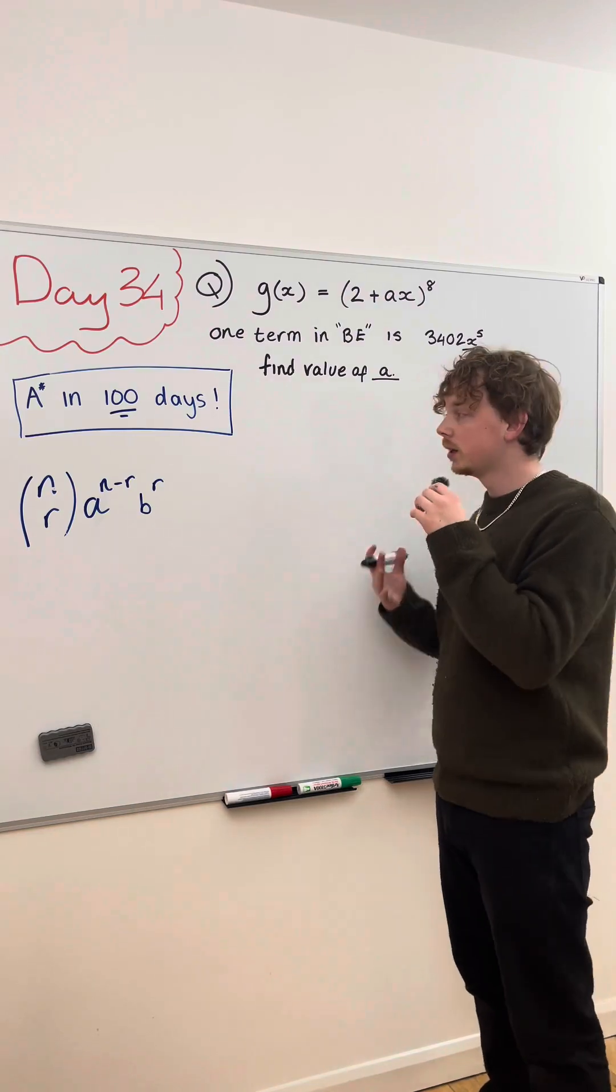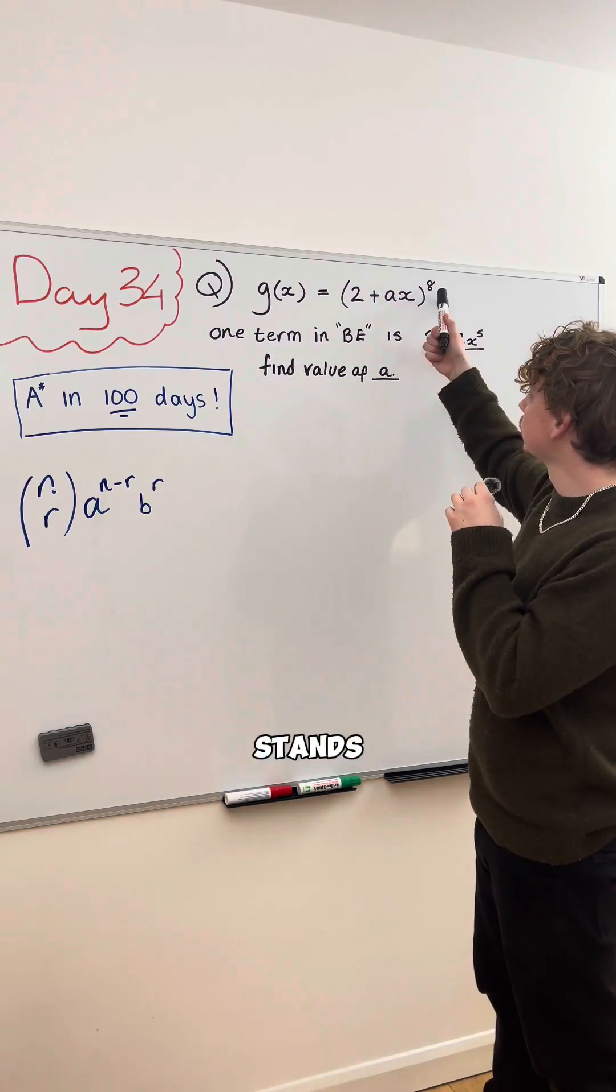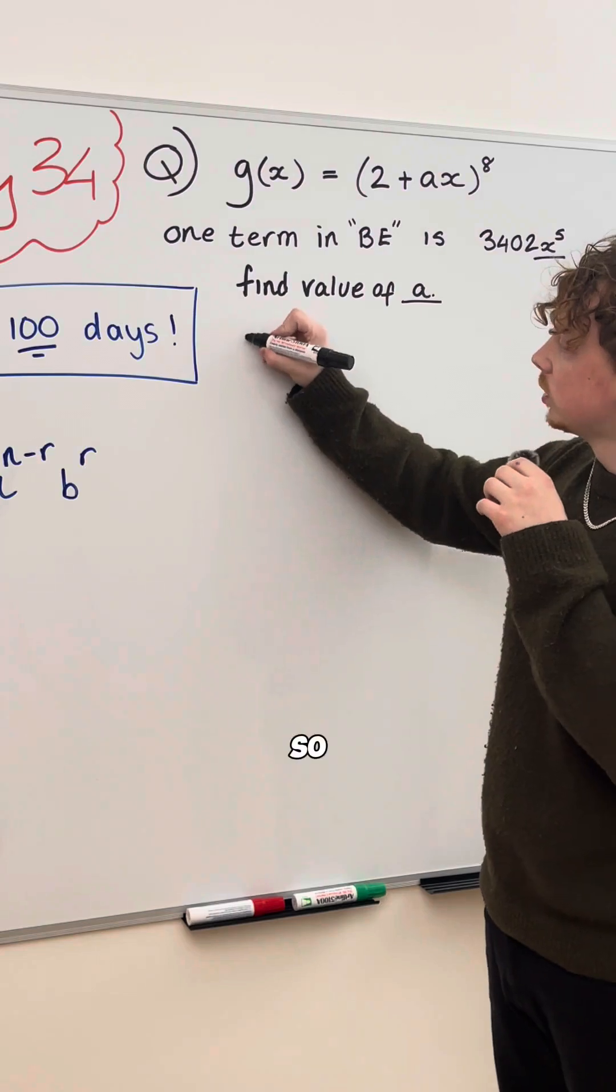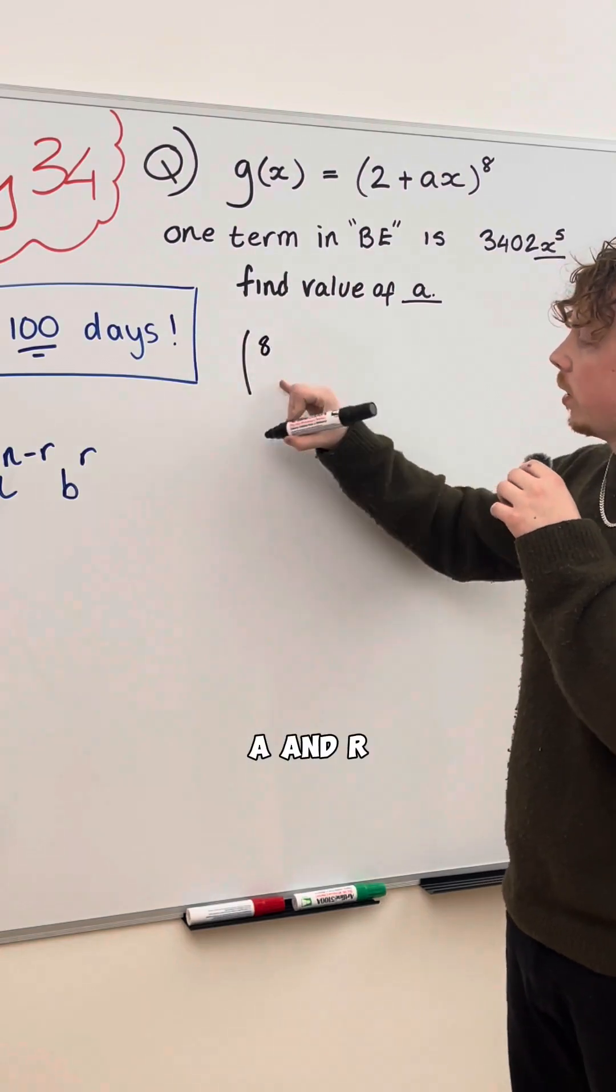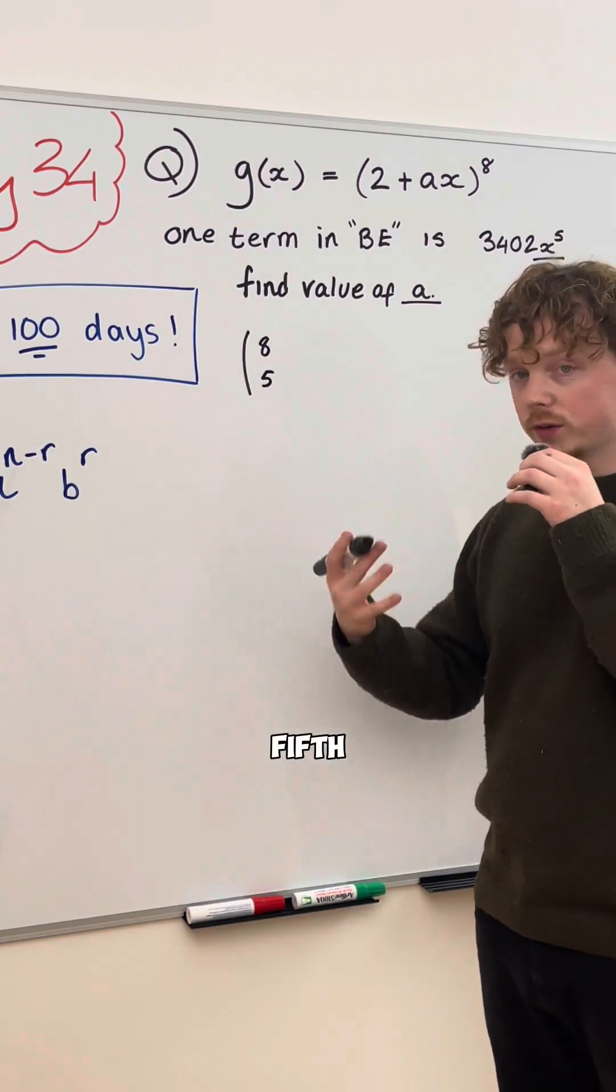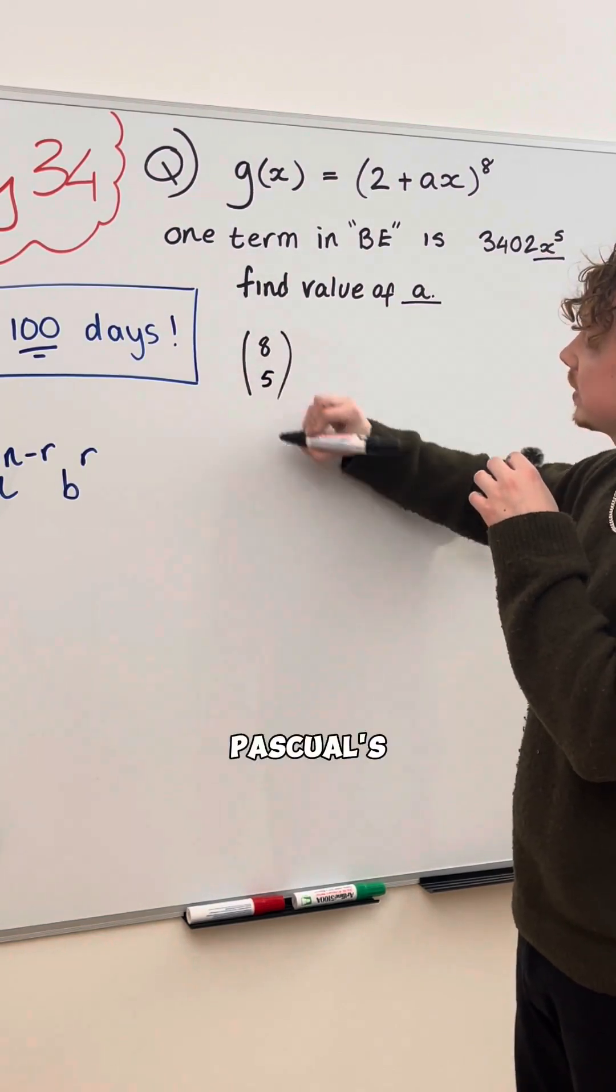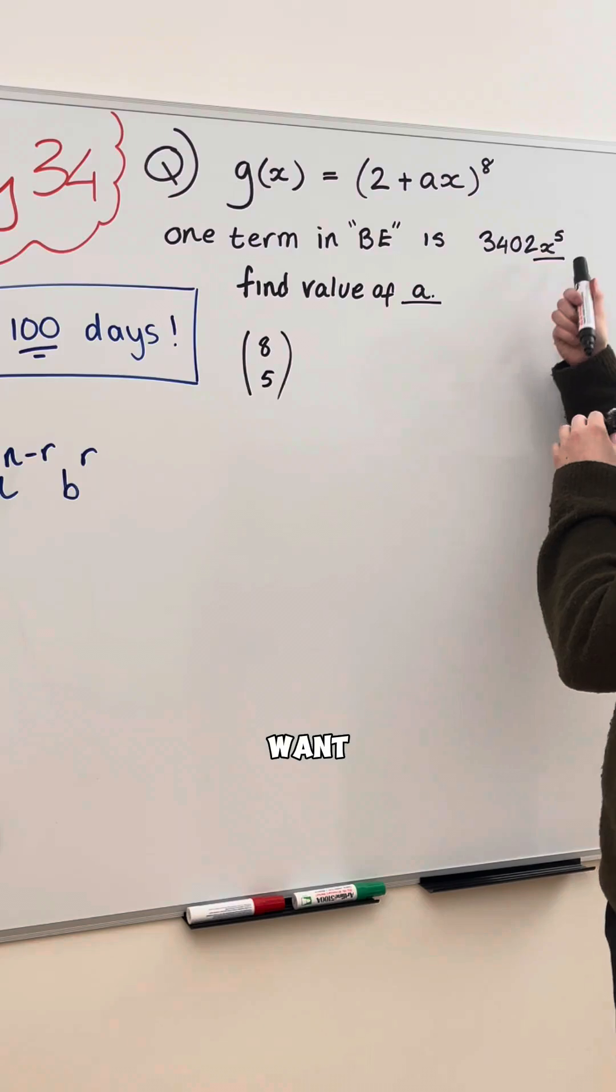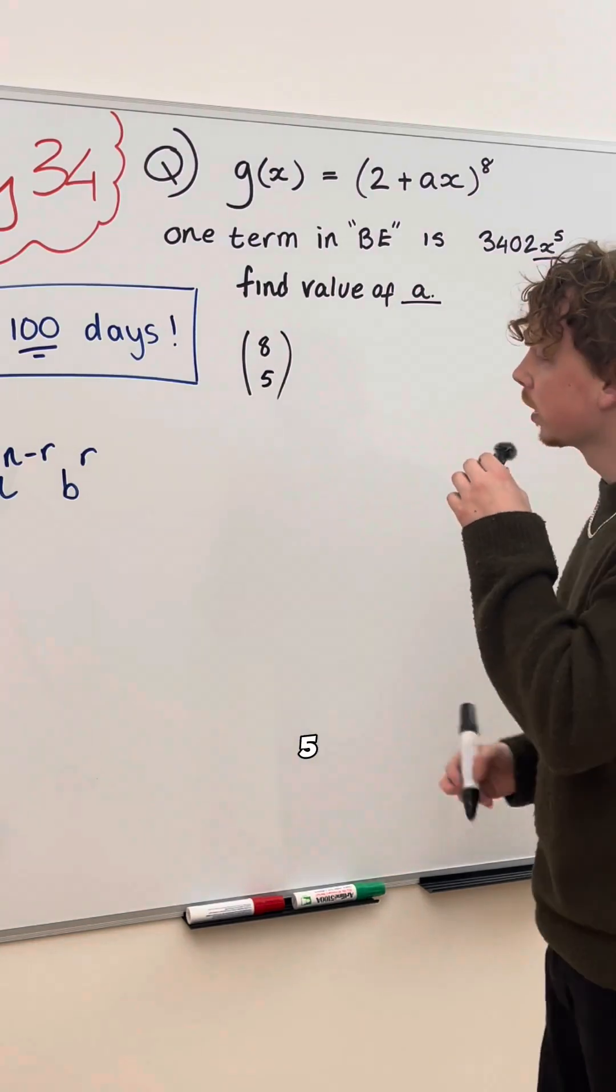Let's substitute the values in. Now, N stands for this guy up there, so we're going to have A and R. We're actually looking for the fifth term in Pascal's triangle because we want x to the power of 5.